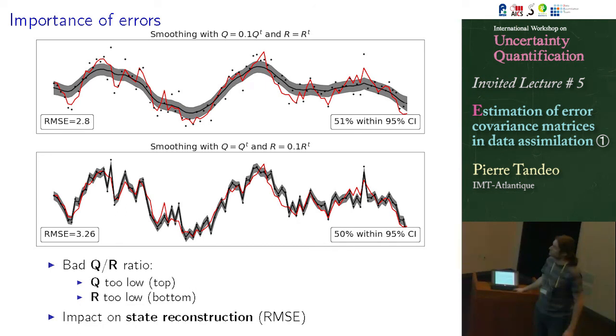So in these two cases, there is a bad Q and R ratio, okay? You see that the ratio here is not one. The good ratio is one between Q and R. And you have two bad ratios. And you have an impact on the state reconstruction.